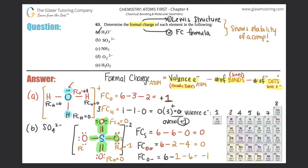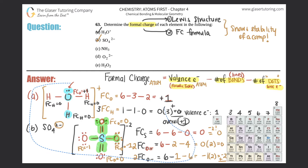The single-bonded oxygen on the left is exactly the same, so its formal charge is also −1. Now verify: sum of all formal charges should equal the overall charge of −2. Double-bonded oxygens: 0 × 2 = 0. Single-bonded oxygens: −1 × 2 = −2. Sulfur: 0. Total: 0 + 0 + (−2) = −2, which matches the 2− charge in the upper right corner. Part B is done.